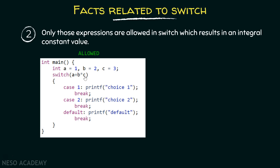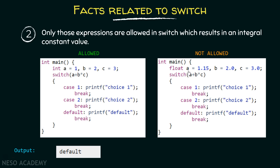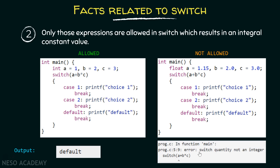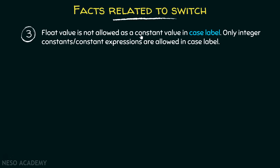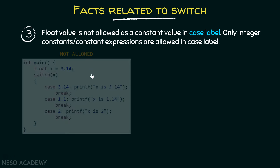Fact number two: only those expressions are allowed in switch which result in an integral constant value. For example, here I have declared three variables a, b, and c with values 1, 2, and 3 respectively. Inside the switch, the expression a + b * c evaluates to seven — an integral constant — so it is allowed. Since seven doesn't match case one or two, default gets evaluated and the output is 'default.' On the other hand, if you declare float variables, the expression evaluates to a float value, which is not allowed. This will produce an error: 'switch quantity not an integer.'